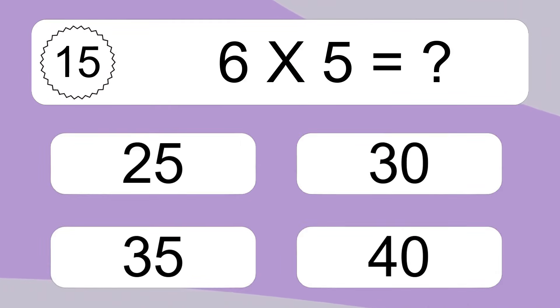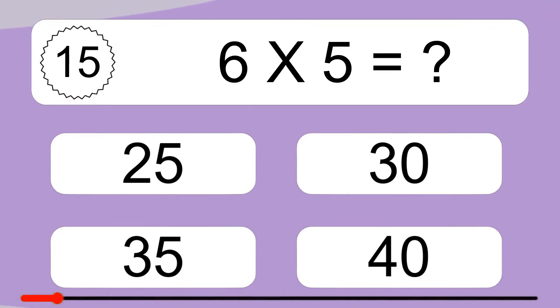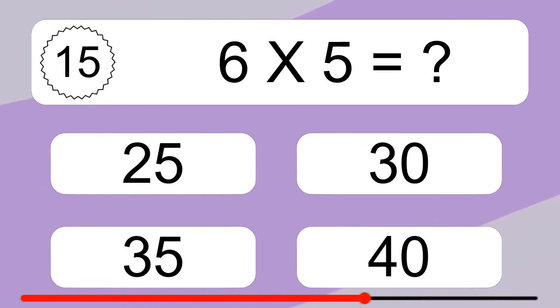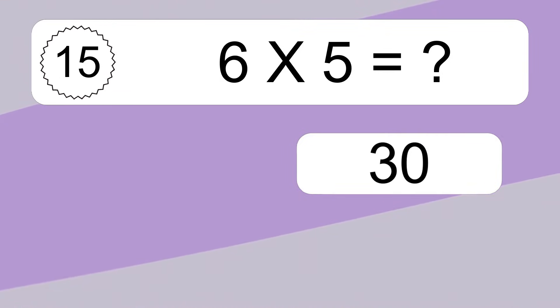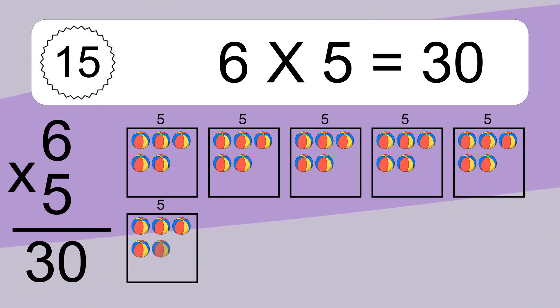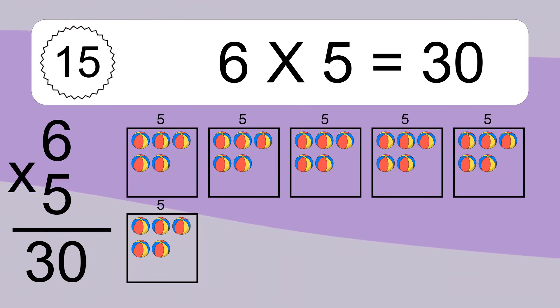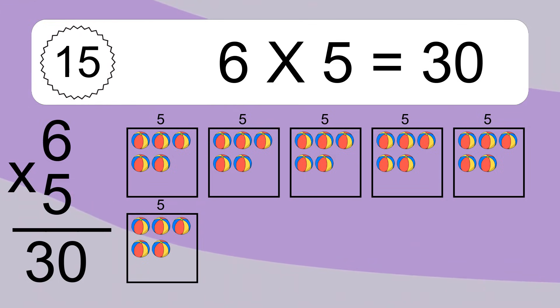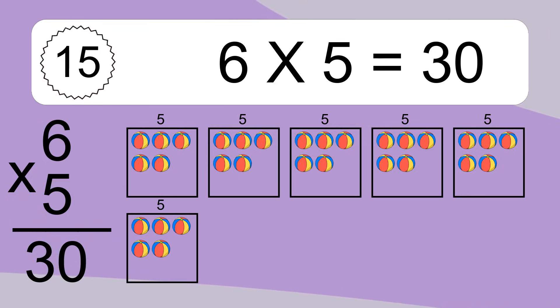6 times 5 equals what? 6 times 5 equals 30. We have 6 boxes and each box has 5 colorful balls inside. If you count all the balls in all the boxes together, you will have 6 times 5 balls. This equals 30 balls.